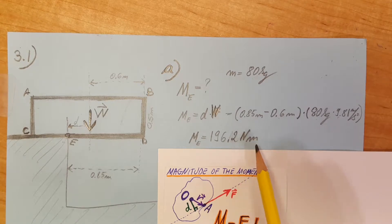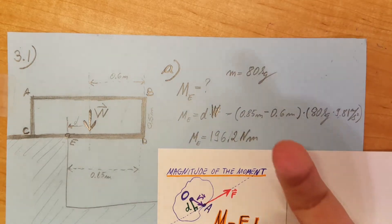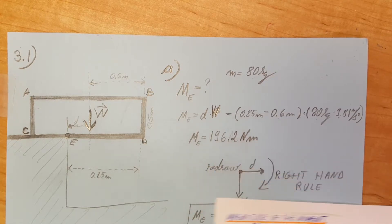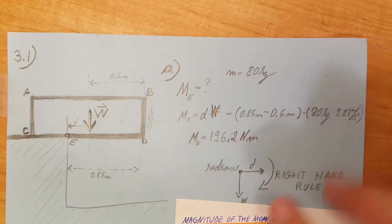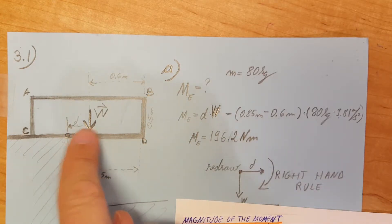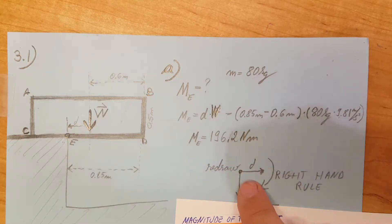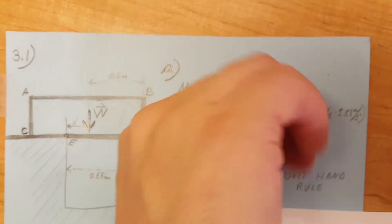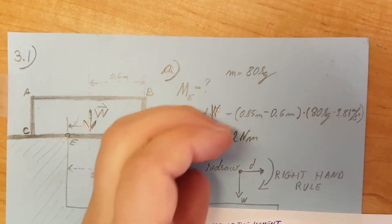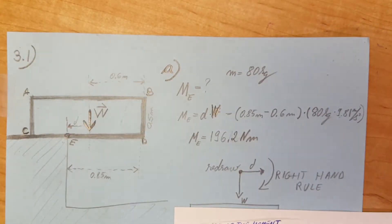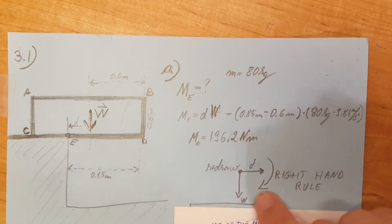Now in order to see which way this is—is it going into the paper or coming out of the paper—we're going to redraw it right here. We're going to take our d, which is our position vector, and our W. We're going to redraw them around point E and use our right hand rule. We can see that by turning d into W, our moment will be pointing into the paper, so therefore it's rotating this way.